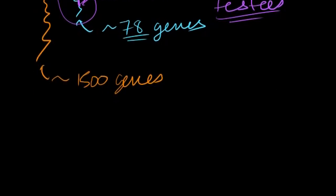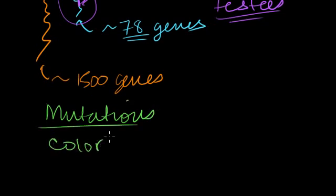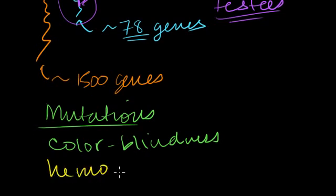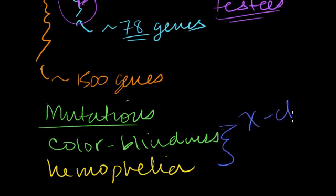The genes are the mutations, I should say. So the mutations that cause colorblindness, red-green colorblindness, which I did in green, which is maybe a little bit inappropriate. Colorblindness and also hemophilia. Hemophilia. This is an inability of your blood to clot. Actually, there's several types of hemophilia. But hemophilia is an inability for your blood to clot properly. And both of these are mutations on the X chromosome. And they're recessive mutations.